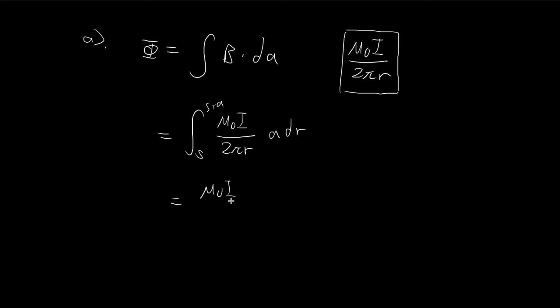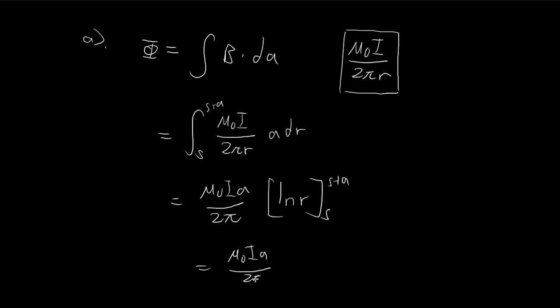Integrating this is straightforward. I can pull out all the constants. Integrating 1 over r gives the natural log of r. Substituting the numbers in, you arrive at this expression. This is the answer to part A — the amount of flux going through the square.